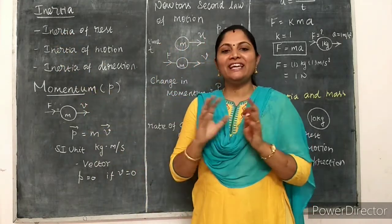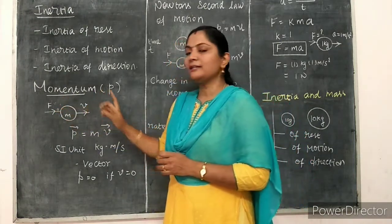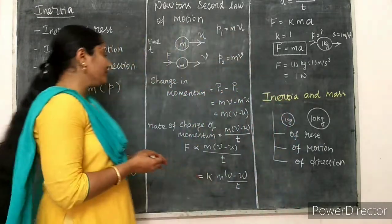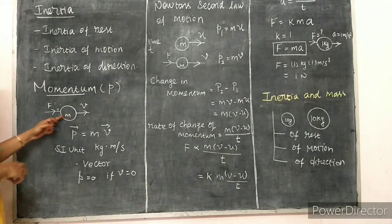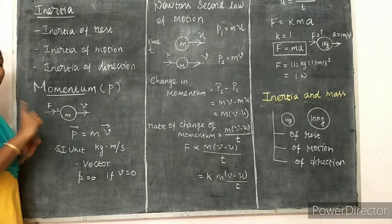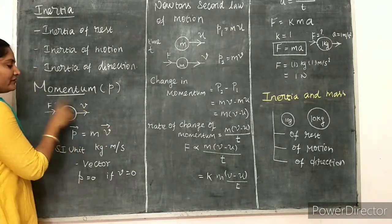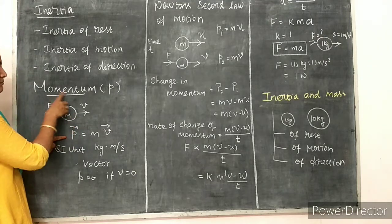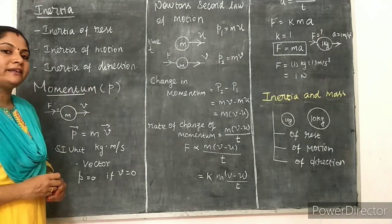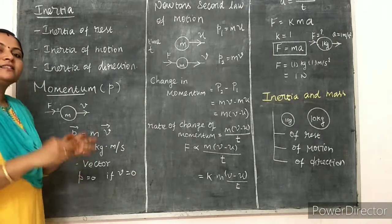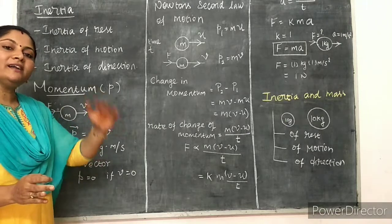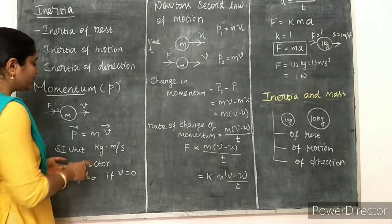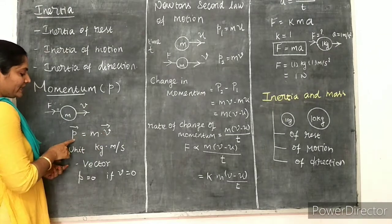Momentum is a special characteristic of an object in motion. If we consider an object of mass M, a force F is acting on that object, due to which the object comes to motion and moves with a velocity V. This special characteristic is called momentum. Momentum is denoted by the letter P, and it is the product of the mass of the object and its velocity.